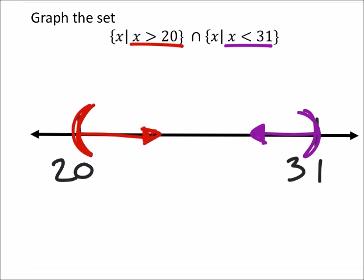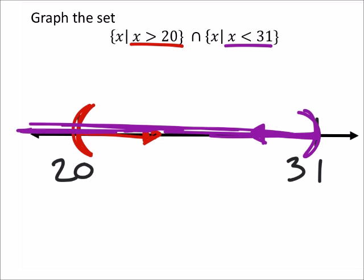Now the problem with this is if I just look at this purple line right here, it would continue past that point. But since this is the symbol for and, where we want the intersection between these two, what that means is we can't really go past where the two intersect.